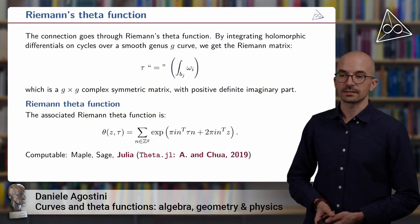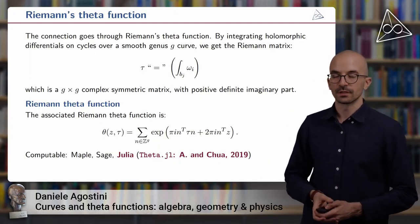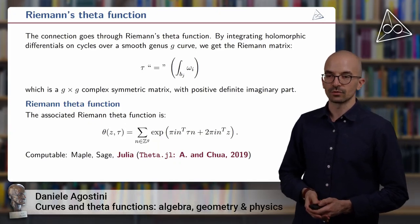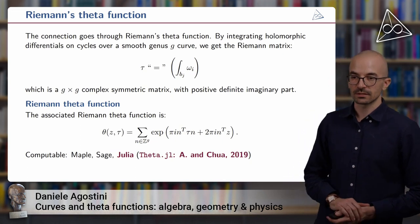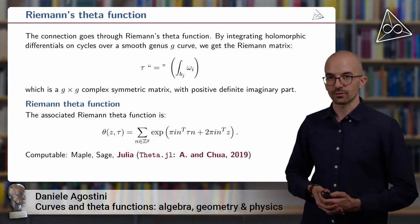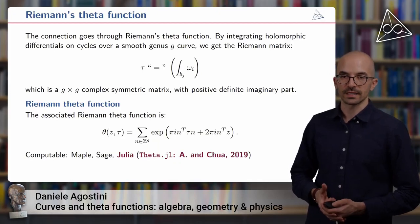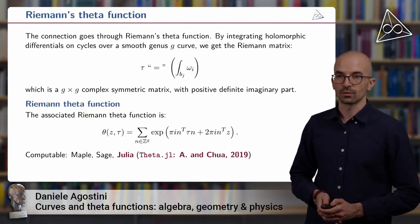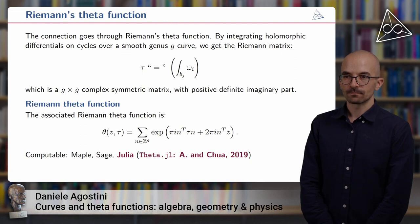So this has many important properties. One of them is that its convergence is very fast, so it can be computed effectively on a computer. There are various computer algebra systems that are able to do that. For example, you can do that in Maple, in Sage, and most recently in Julia thanks to a software package called theta.jl that was developed by Lin Chua and myself while I was a postdoc here at the institute and Lin was a visiting PhD student from Berkeley.